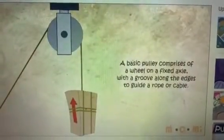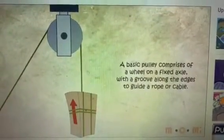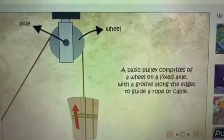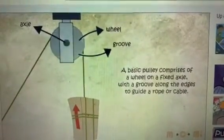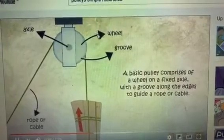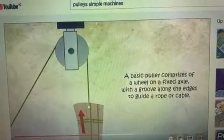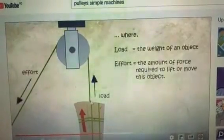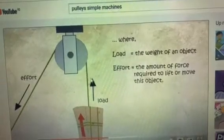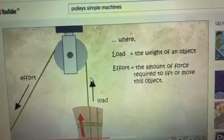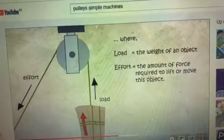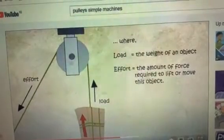A pulley is a kind of simple machine consisting of a wheel over which a rope or a chain is pulled in order to raise or lower heavy objects. It contains a rope and a wheel.